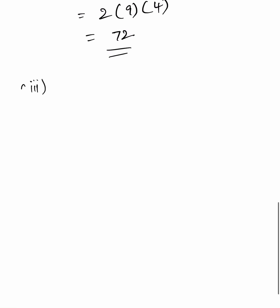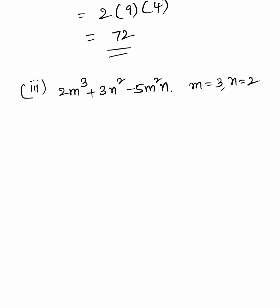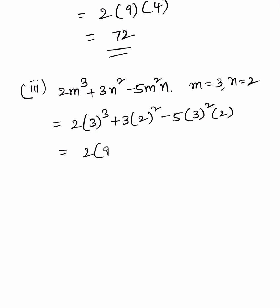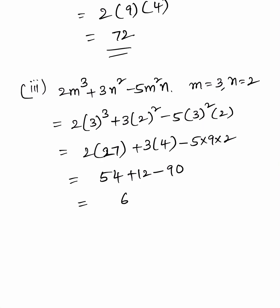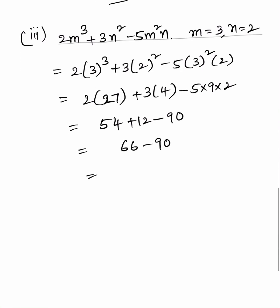Third bit: 2m cube plus 3n square minus 5m square n. Substituting m equals 3 and n equals 2: 2 into 3 cube plus 3 into 2 square minus 5 into 3 square into 2, equals 54 plus 12 minus 90, equals 66 minus 90, equals minus 24.